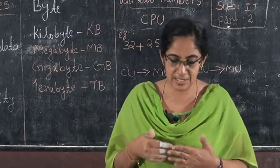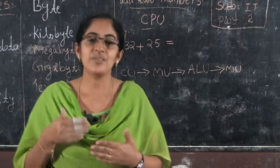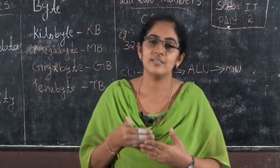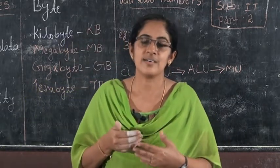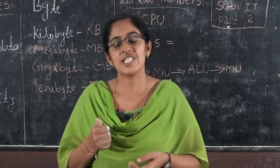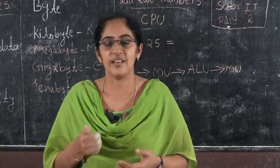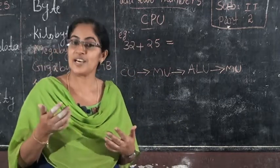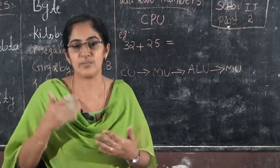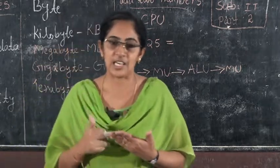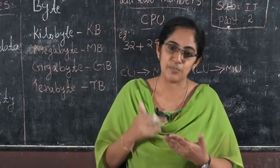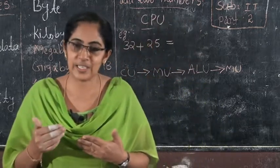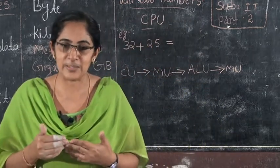In the last class we studied keyboard, mouse and CPU. How many components does CPU have? CPU has three components: ALU, MU and CU. Do you remember?